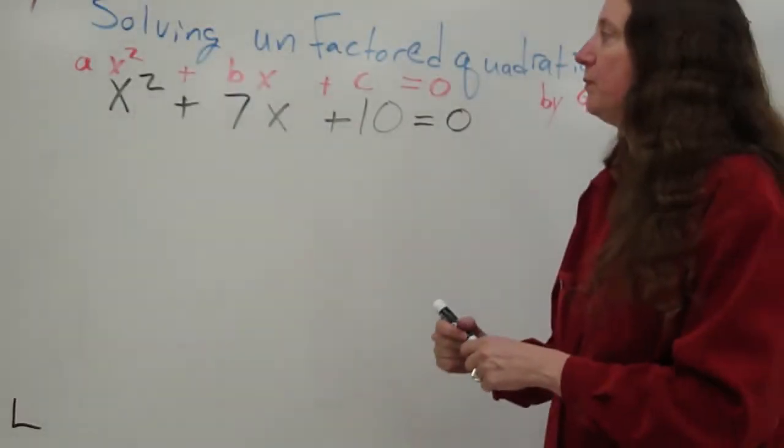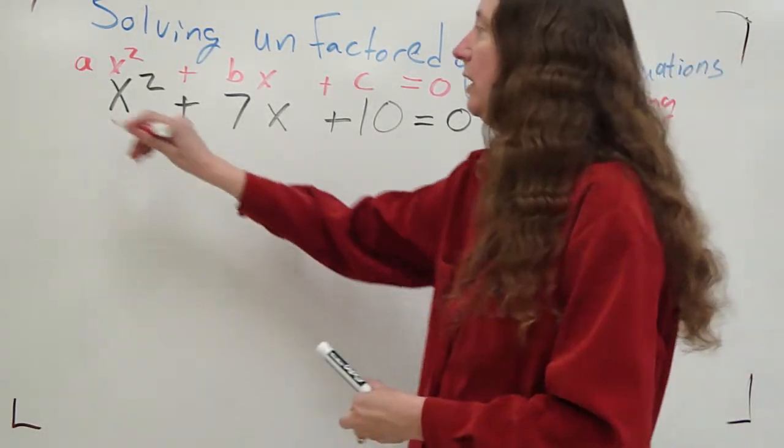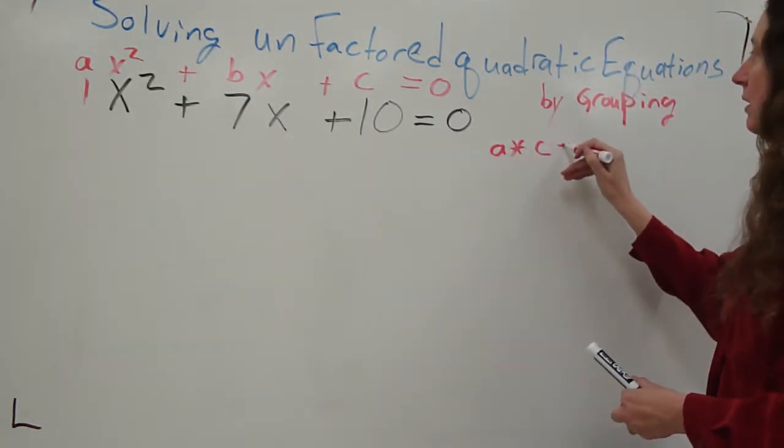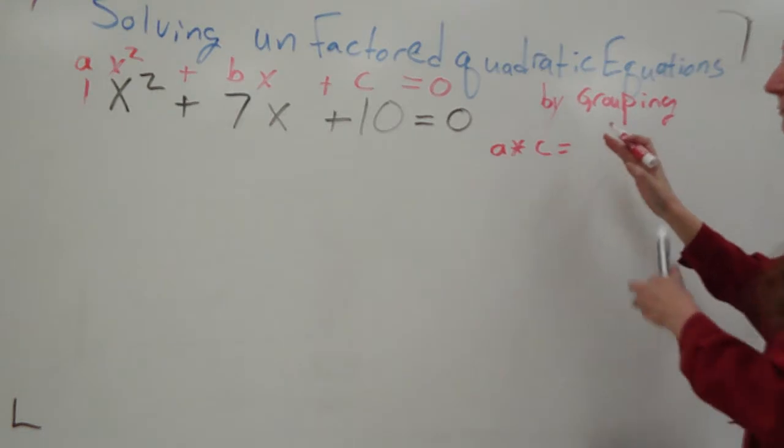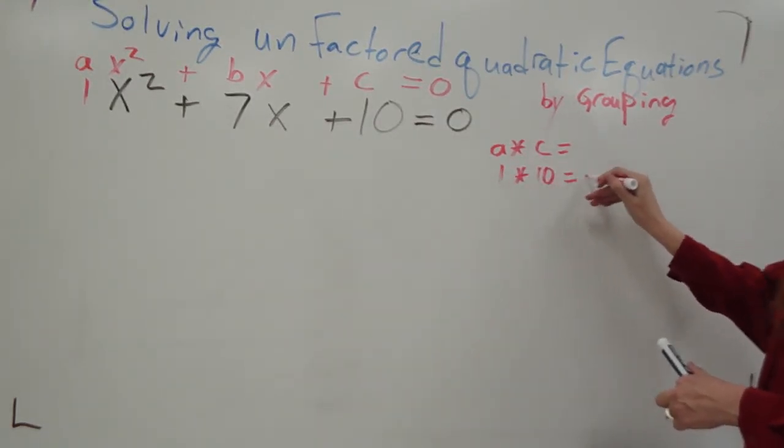Once it's in that form, you take your a term, in this case which is 1, times your c term to get a number that will be factored out. So here we have 1 times 10. We get 10.